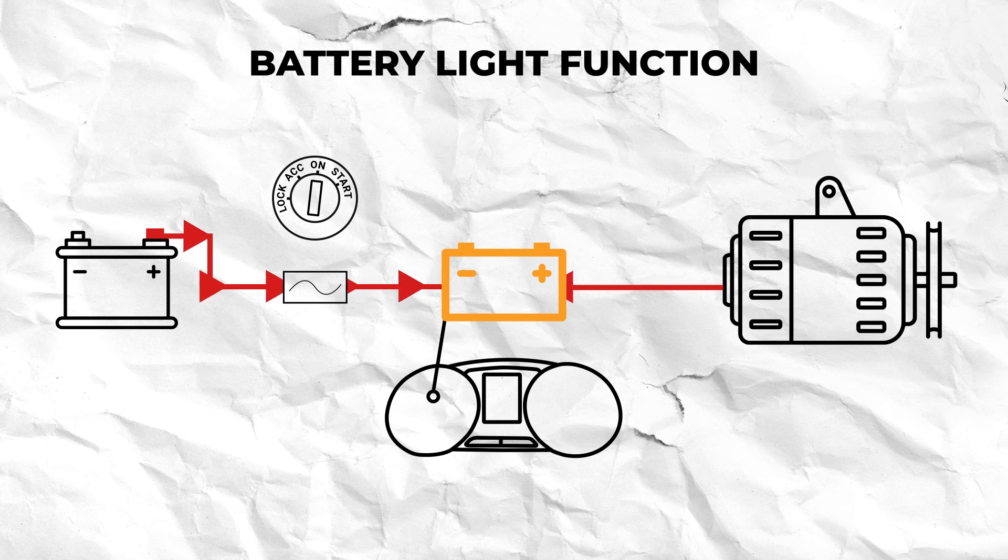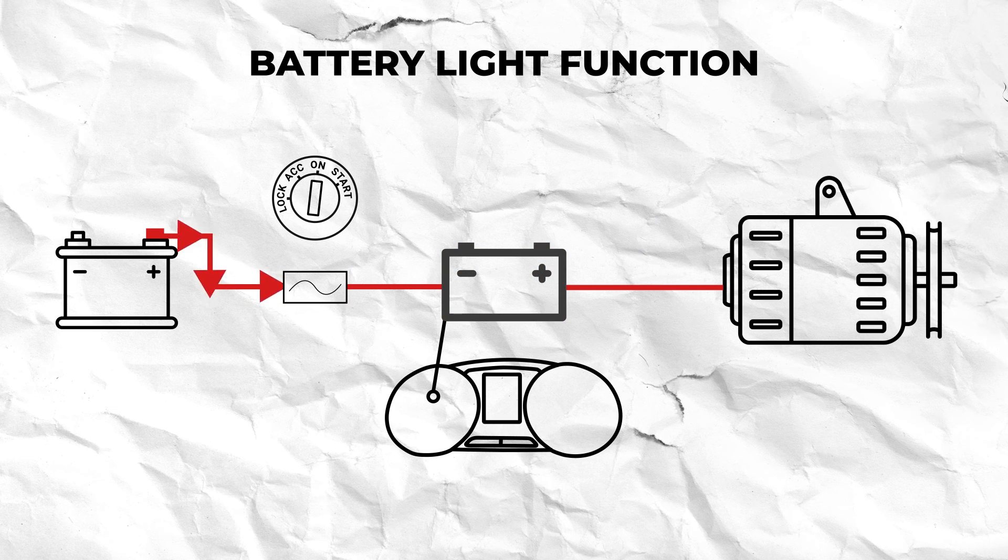This is why it should appear on the dash when the ignition is on but the vehicle hasn't been started as no voltage is coming from the alternator. If it doesn't appear with the ignition on then this is a tell-tale sign of a blown fuse.